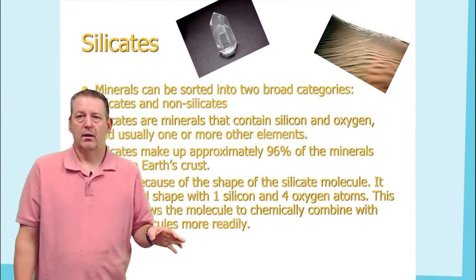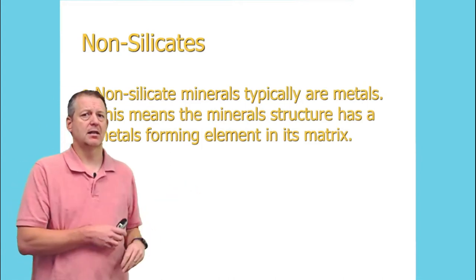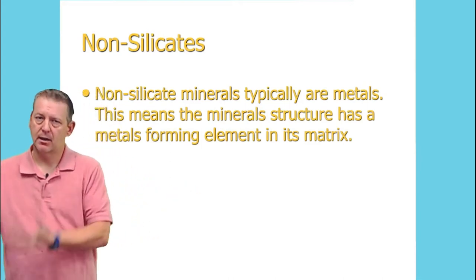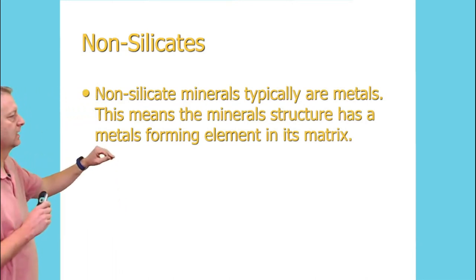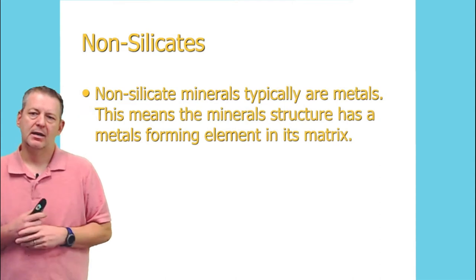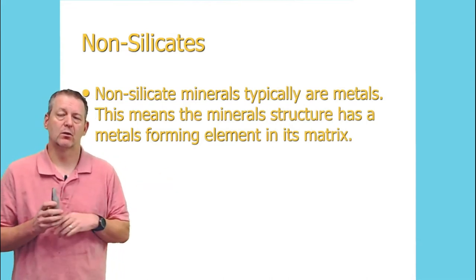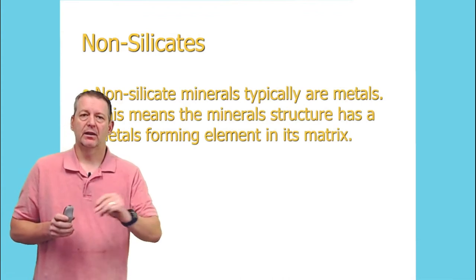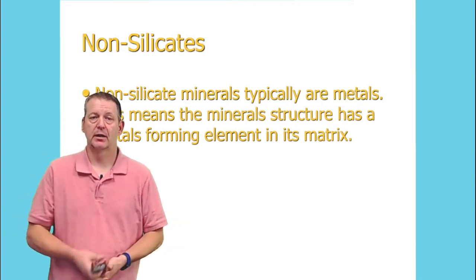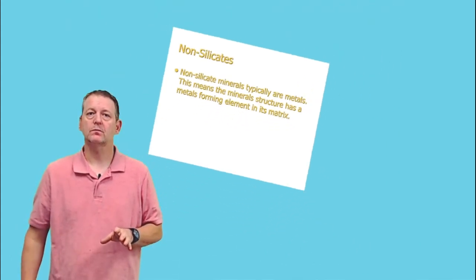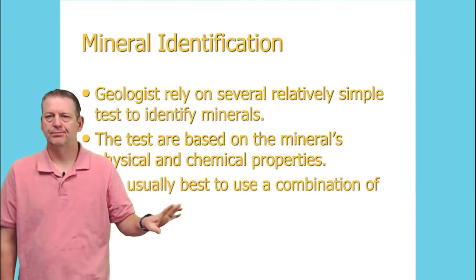Non-silicates are the other category — they're typically not glassy and are often metallic in appearance. These minerals have a metal-forming element in their structure and can have a metallic look. So the two main categories are silicates, which look glassy, and non-silicates, which are typically metallic.